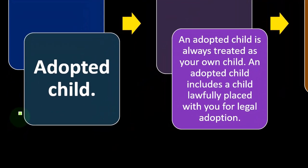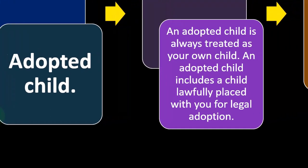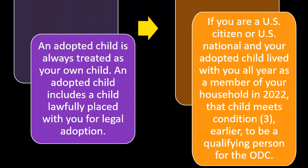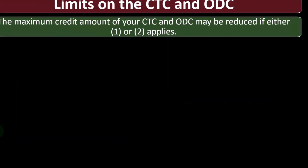Adopted child: an adopted child is always treated as your own child, and an adopted child includes a child lawfully placed with you for legal adoption. If you are a U.S. citizen or U.S. national and your adopted child lived with you all year as a member of your household in 2022, that child meets condition three to be a qualified person for the ODC other dependent credit.